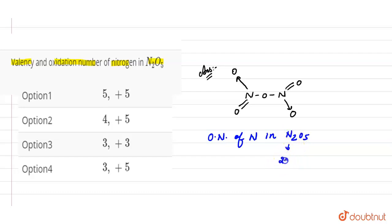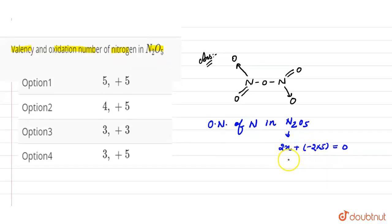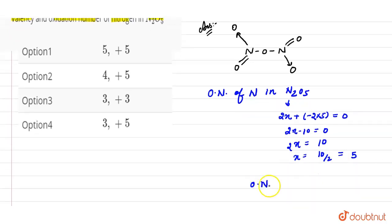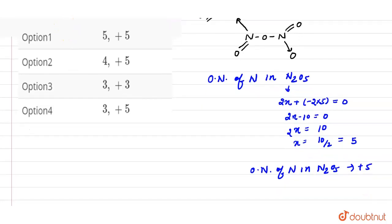There are two nitrogen atoms, so it will be 2x. Oxygen has a charge of minus two, and there are five oxygen atoms, so we multiply minus two by five. The net sum is zero, giving us 2x minus 10 equals zero. So 2x equals 10, and x equals 10 divided by 2, which gives us 5. The oxidation number of nitrogen in N₂O₅ is plus 5.